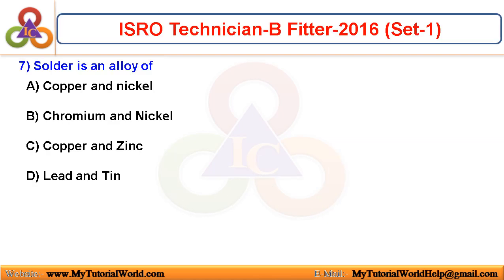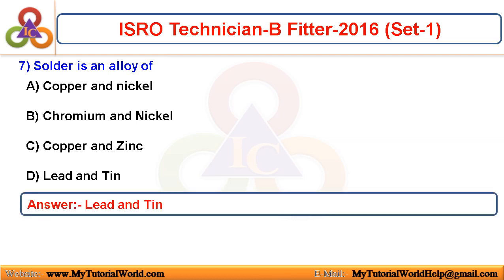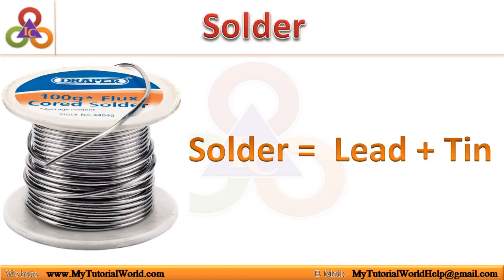Solder is an alloy of? The answer is — it is made up of lead and tin. Solder is an alloy of lead and tin. Normally solder is used in electrical soldering of electrical components, and it is a combination of 50% lead and 50% tin.